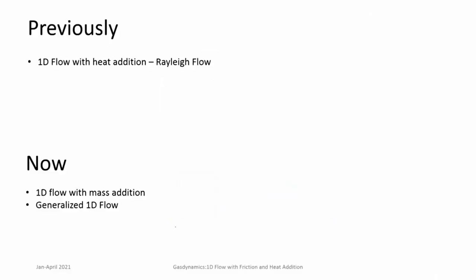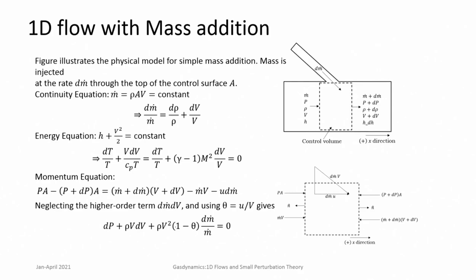Until now the analysis we were doing used the quasi 1D assumption, which is that flow properties remain uniform across cross sections. We looked at different drivers like either only area was changing, or there was only friction and no other effects in a constant area duct, or similarly only heat addition or heat removal. But in real life problems and applications, there is always a combination of these effects. So how do we analyze such flows? Before we go there, we will quickly look at what happens when there is mass addition without going much into details.